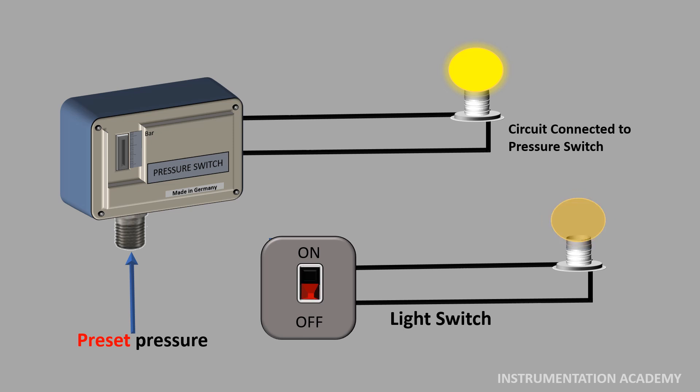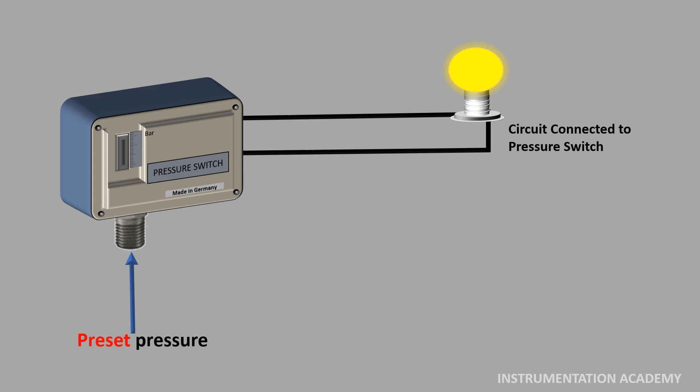But in the case of a pressure switch, instead of being manually switched, the switch closes or opens the contact when the input pressure reaches above or below a preset value. This preset pressure is known as set point of the pressure switch.